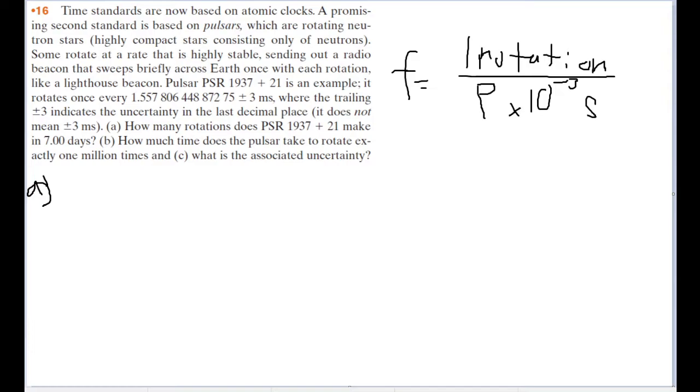And now we want to get the number of rotations that we'll make it in 7 days. So for our actual number value then, that's going to be equal to one rotation over P times 10 to the negative 3 seconds. And now we want to do a little conversion to get this into the number of rotations. So if it's one rotation per a number of seconds, we want those units to cancel out.